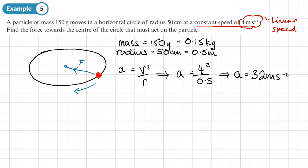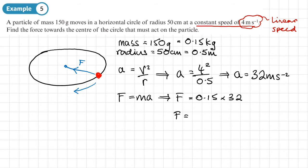We can now use F equals MA to find the force. F equals the mass 0.15 times the acceleration 32, which gives us a force of 4.8 newtons. This is a combination of the formula for acceleration and then F equals MA.